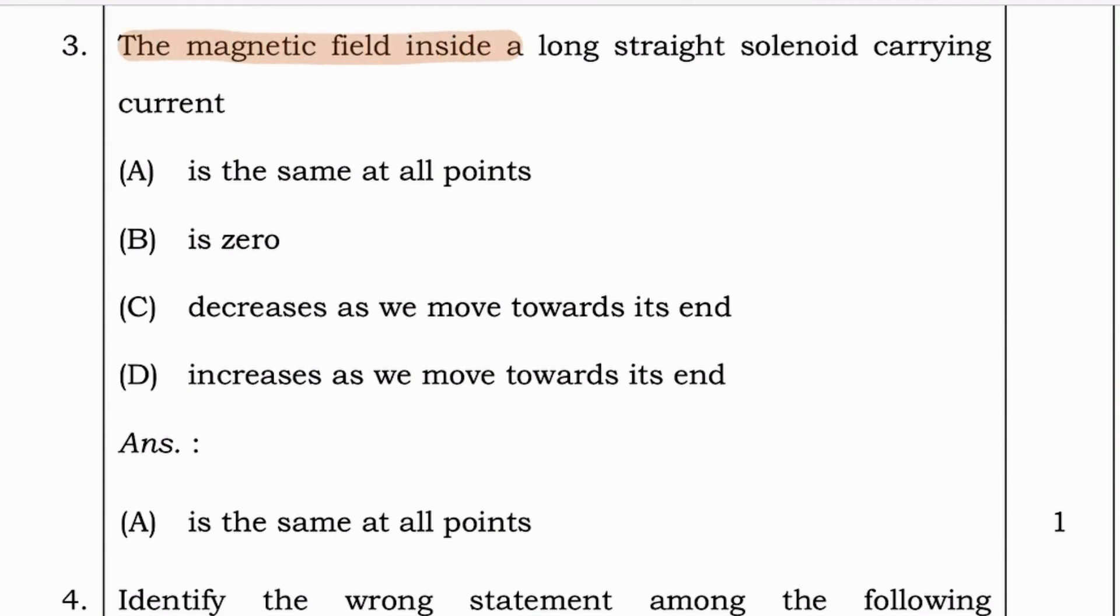Next question. The magnetic field inside a long straight solenoid carrying current is the same at all points, is zero, decreases as we move towards its end, or increases as we move towards its end. And answer for this question is option A, is the same at all points.